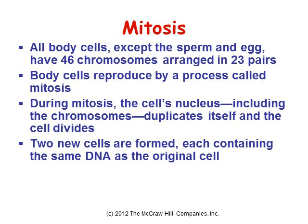All body cells, except the sperm and the egg, have 46 chromosomes arranged in 23 pairs. Body cells reproduce by a process called mitosis, during which the cell's nucleus — including the chromosomes — duplicates itself and the cell divides. Two new cells are formed, each containing the same DNA as the original cell.